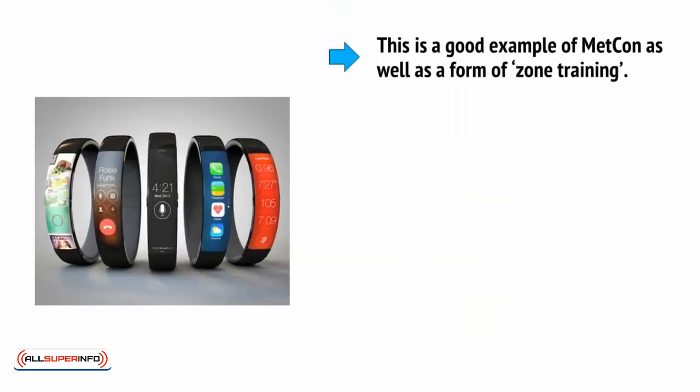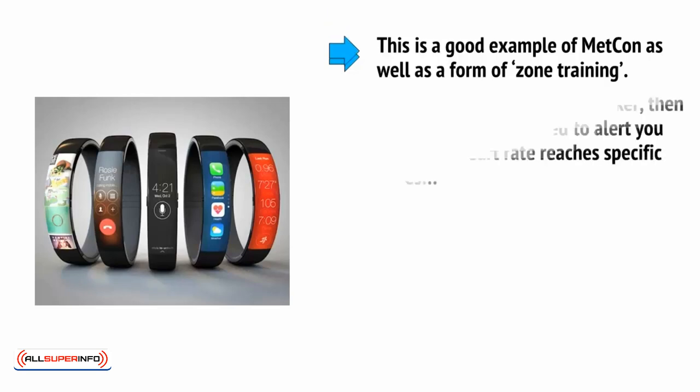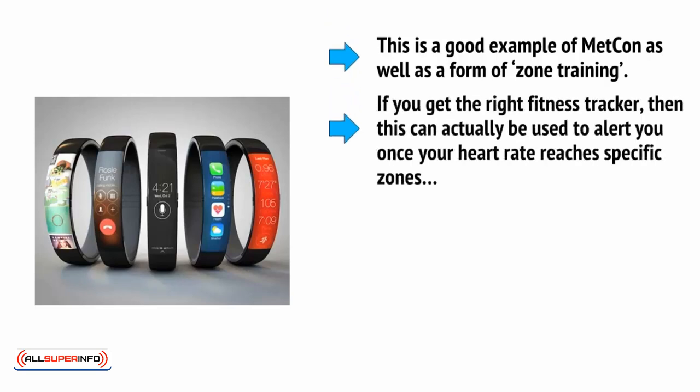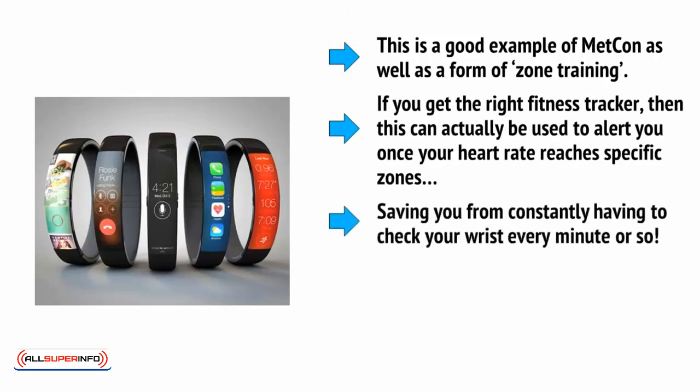This is a good example of Metcon as well as a form of zone training. If you get the right fitness tracker, then this can actually be used to alert you once your heart rate reaches specific zones, saving you from constantly having to check your wrist every minute or so.